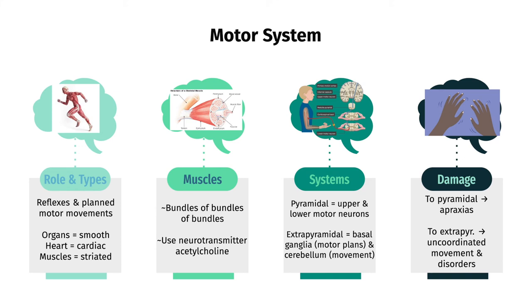Now, on to our motor system, which is responsible for our reflexes and planned motor movements. We have three types of muscles: smooth muscle in our organs, cardiac muscle in our heart, and skeletal or striated muscle, which moves us around. Muscles are basically bundles of bundles of bundles of fibers, and connect with motor neurons at the neuromuscular junction, where acetylcholine is the main neurotransmitter used. The motor system consists of the pyramidal system, including upper and lower motor neurons, and the extrapyramidal system, consisting of the basal ganglia and cerebellum. The basal ganglia is important in motor planning, while the cerebellum coordinates motor movement and judges distance, and also accounts for half of the neurons in the CNS.